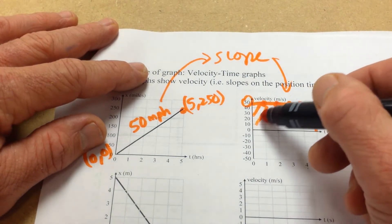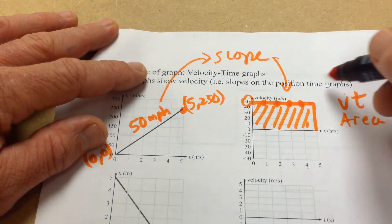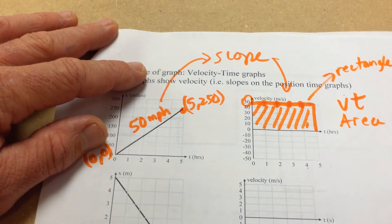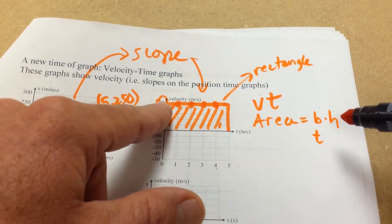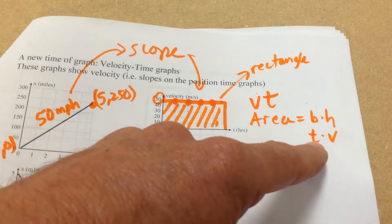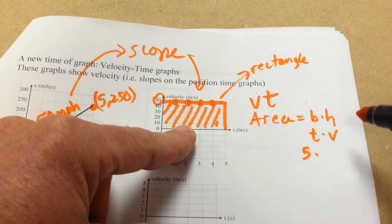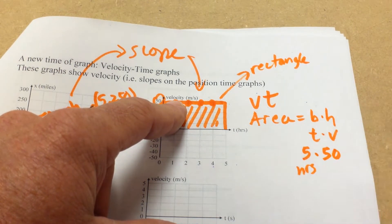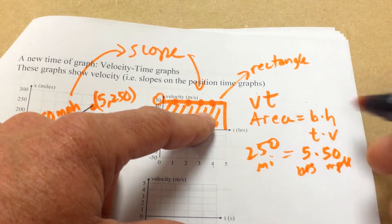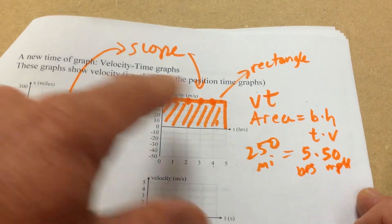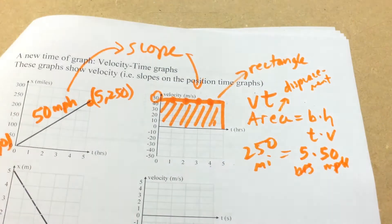What we can do is hatch out this area. The area of the graph is a rectangle. The area of a rectangle is base times height. But this base is really a time idea, and the height really represents a velocity. So all we need to do is multiply the velocity times time — 5 times 50, that's 5 hours times 50 miles per hour. The hours cancel and we're left with 250 miles. That's exactly what we knew the car had traveled. So this area really represents the displacement of the object.